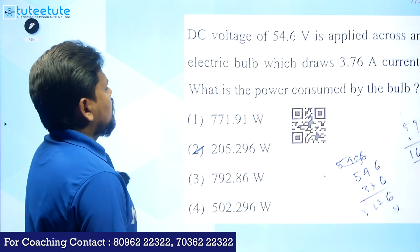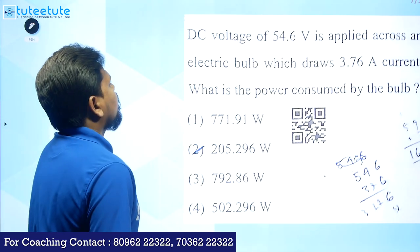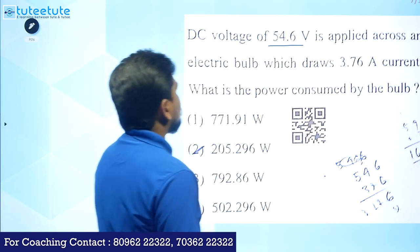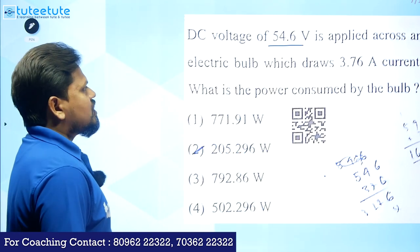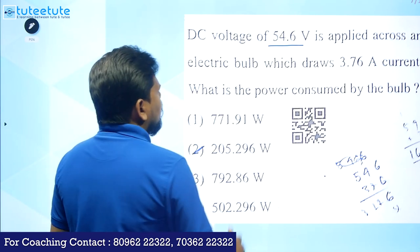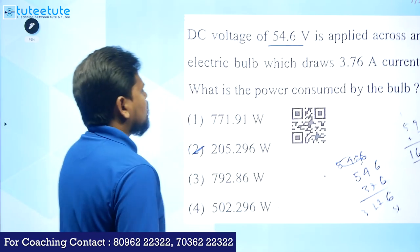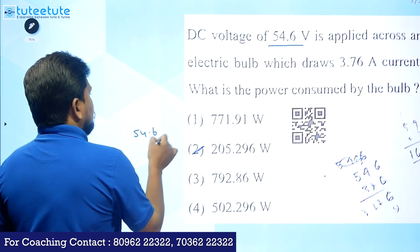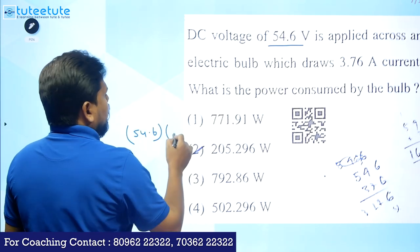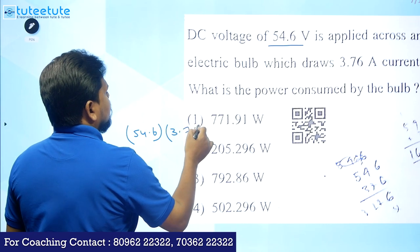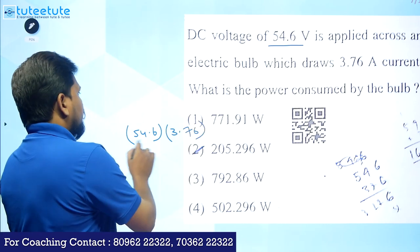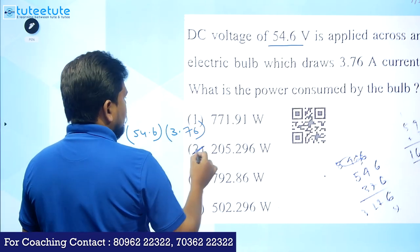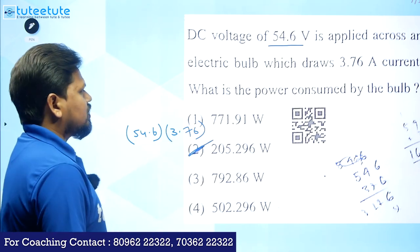Next question: DC voltage of 54.6V is applied across an electric bulb which draws 3.76 amperes. What is the power consumed? No complex formula needed — power P = V × I = 54.6 × 3.76, which is approximately 4 times 54.6. That gives the answer.